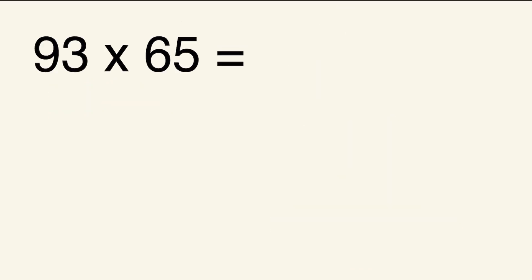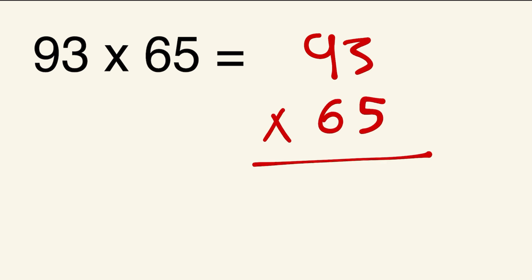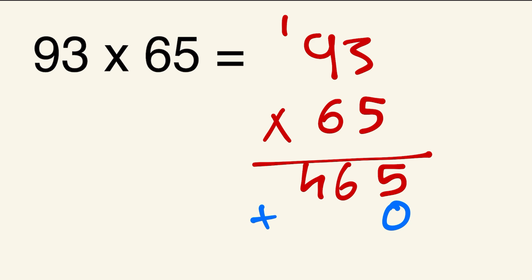Our next example is 93 times 65. Write it vertically. First the ones digit: 5 times 3 is 15 — write the 5, carry the 1. Then 5 times 9 is 45, plus 1 is 46, so we have 465. Now add the 0 and multiply by 6: 6 times 3 is 18 — write the 8, carry the 1. Then 6 times 9 is 54, plus 1 is 55.